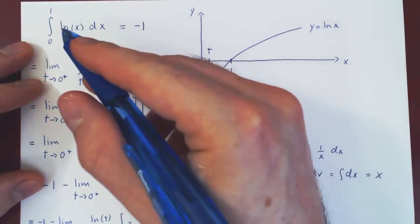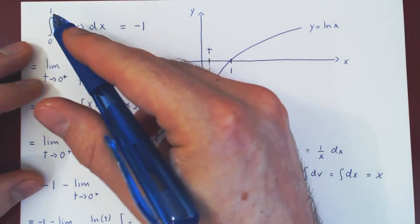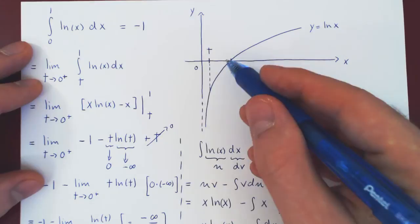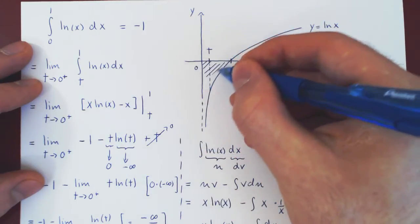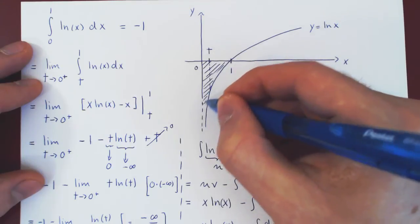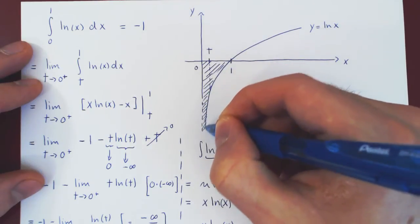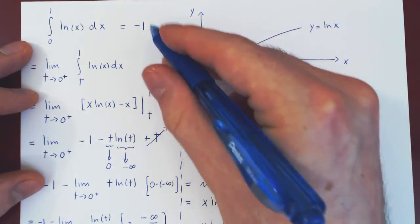And so, if you integrate ln of x from 0 to 1, even though at 0 we have a vertical asymptote, the result is exactly negative 1.